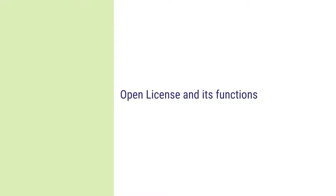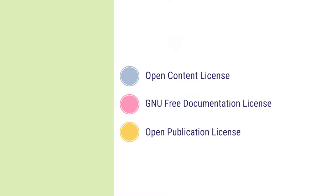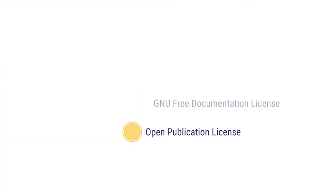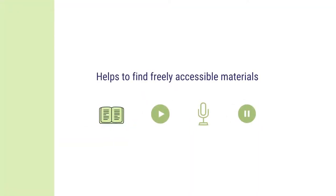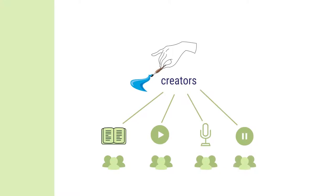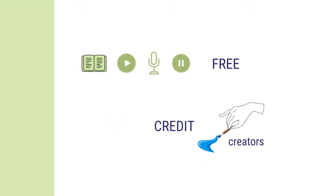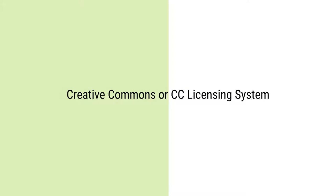We shall now take a look at Open Licenses and how they function. There are many licensing systems that one may come across while browsing. A few examples are the Open Content License, GNU Free Documentation License, and Open Publication License. These licensing systems exist to help users create more chances of finding freely accessible material. The Open Licensing systems make it easier for creators to share their work freely, on the terms that they be given credit. The licensing systems make sure that even if a work is available as free to use, the authors get credit for their ideas.